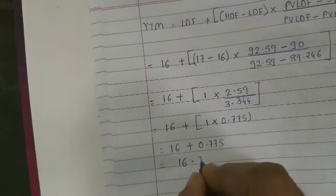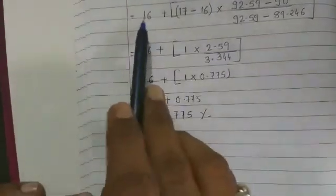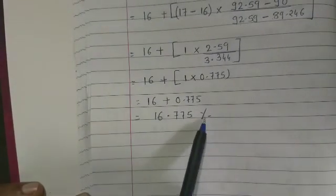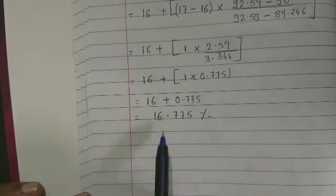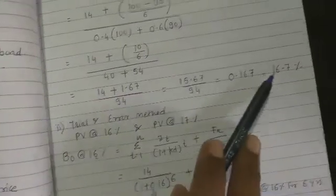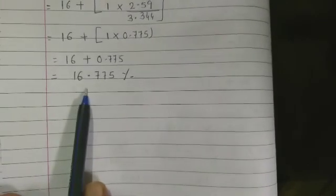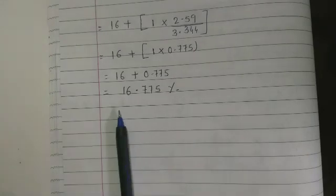So YTM from the trial and error method equals 16.775%. This means at 16.775%, the present value of the bond equals the selling price. The approximate method also gave approximately 16.7%, so both methods give the same answer of around 16.7–16.775%. That's how the calculation is done. We'll do the next sum in the next video. Thank you.